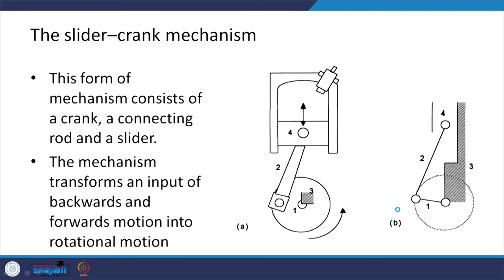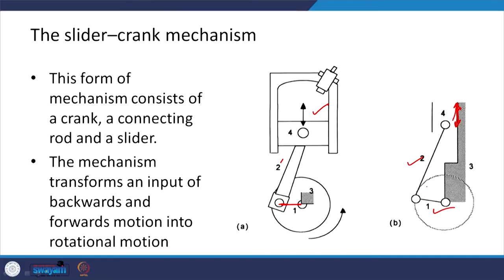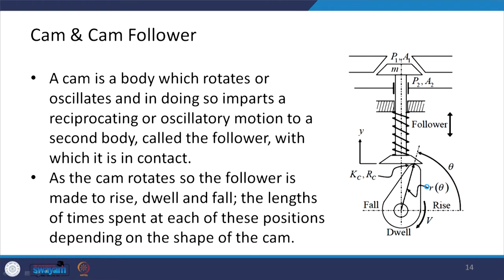The slider crank mechanism consists of a crank, a connecting rod, and a slider. The crank, connecting rod, and slider are the key elements. The advantage of this mechanism is that it transforms an input of backward and forward motion into a rotary motion. In a mechatronic system we may require a certain type of motion to be transmitted, and the slider crank mechanism can be used for this purpose.